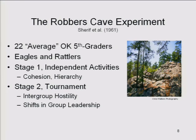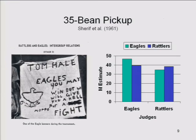As soon as the groups engaged in athletic contests, better athletes became leaders; in more intellectual pursuits, slightly smarter kids became perceived as leaders. In one contest, Sherif and colleagues scattered beans on a playing field and had the groups compete to pick up the most. They then flashed slides of the arrays of beans each group had collected and asked kids to estimate how many beans were in each array. When the Eagles were the judges, they thought they had picked up more beans than the Rattlers; when the Rattlers were judges, they thought they had picked up more than the Eagles — even though there were exactly the same number in both arrays. The point is that group membership affected something as elementary as perception.